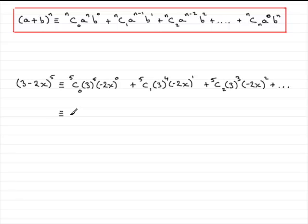Now, 5C0 turns out to be 1, in fact. And if you work this out, 3 to the power 5 times what is effectively 1 here, it comes out to 243.